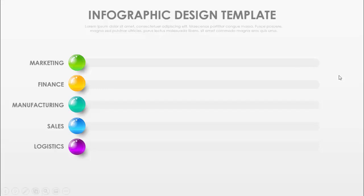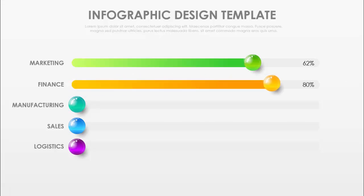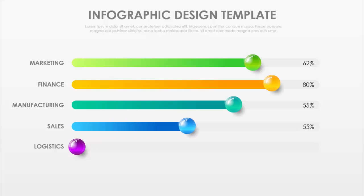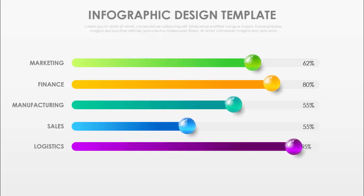When I click you can see it says 62 for marketing, then finance is 80, manufacturing, then sales and logistics. I have also created one more slide without the animation effect, so let's see how to do this in PowerPoint.